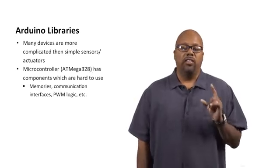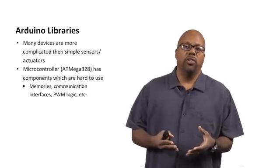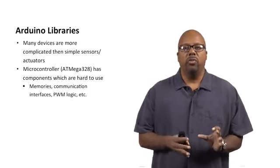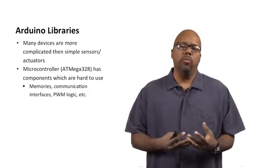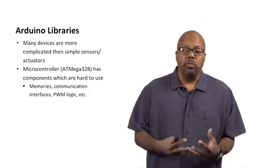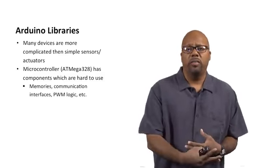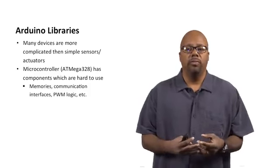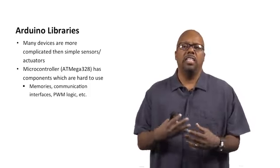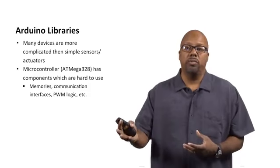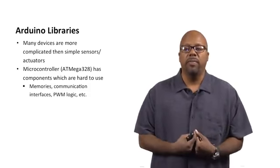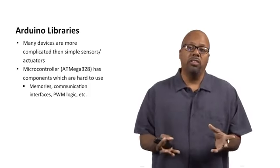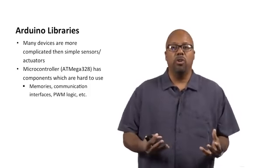Some of these devices that we want to control are actually inside the microcontroller itself. The Arduino Uno has a microcontroller, an Atmega328, and this Atmega328 has a lot of different devices on it. It runs code, but it also has other devices we'd like to use — for instance, memories, where we might want to write things to memory and read things from memory. Communication interfaces like I2C or SPI — different bus communication interfaces — maybe we want the microcontroller to talk to another microcontroller through one of these. Pulse width modulation logic, timers — lots of different components on the chip that we want access to as programmers.